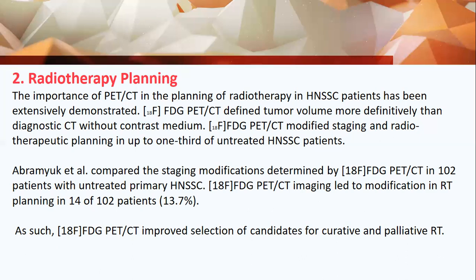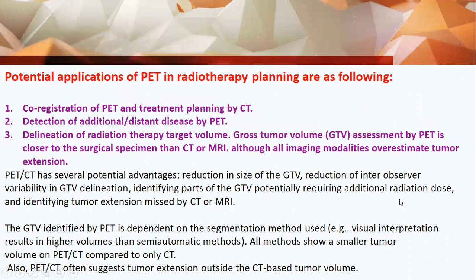FDG PET-CT can improve selection of candidates for curative and palliative radiotherapy. Potential applications include co-registration of PET and treatment planning CT, detection of additional distant metastases, and delineation of the radiotherapy target volume. The gross tumor volume (GTV) assessment by PET is closer to the surgical specimen than CT or MRI, and all imaging modalities tend to overestimate tumor extension.